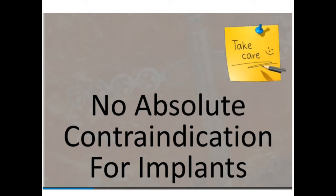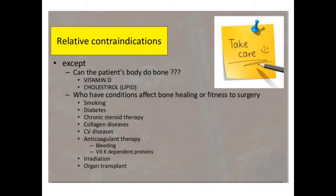There is no absolute contraindication for implants — the same way we say there is no absolute contraindication for extraction. We call these relative contraindications. Be careful with patients treated with radiation, because it causes hypercellularity and necrosis of the bone if you use that bone for implant placement. Otherwise, anything related to bone diseases should be corrected before planning an implant surgery.